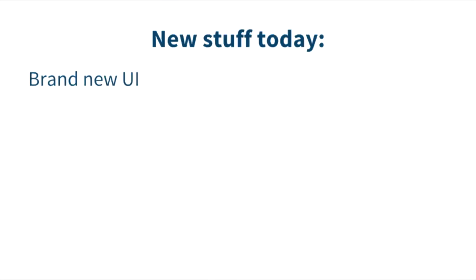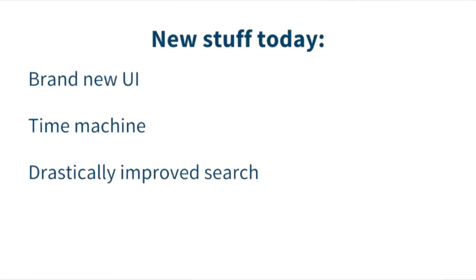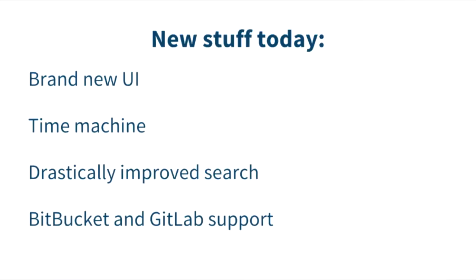As Alex alluded to earlier, we launched a bunch of cool new stuff today. We launched a brand new UI — it should be live, you should see it immediately. We launched a feature called Time Machine, which allows you to roll back tag manipulations, giving you auditability and the ability to recover from a bad push. We offer a drastically improved search that considers repository popularity and proximity in your network. And we added Bitbucket and GitLab support for building, which we'll talk about in just a second.